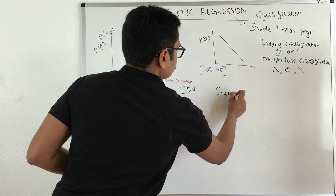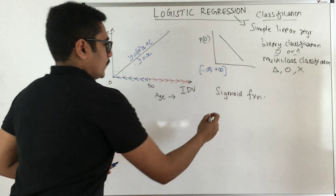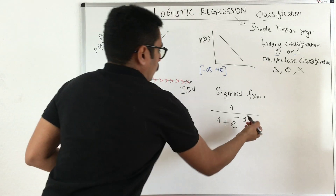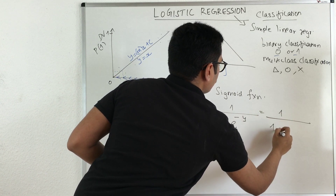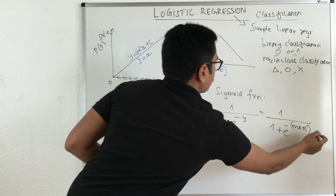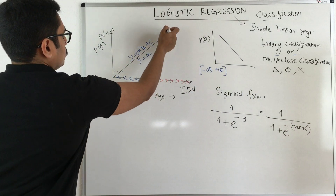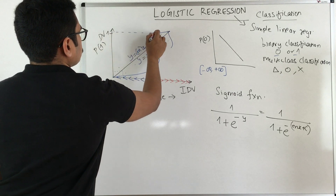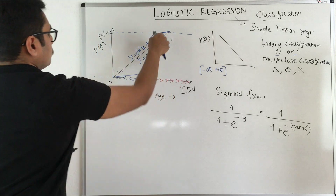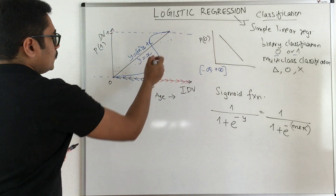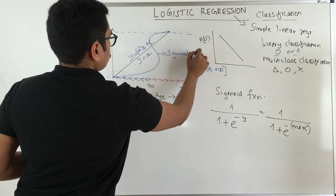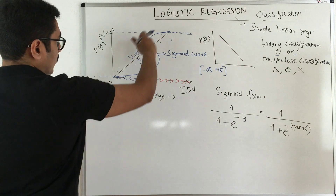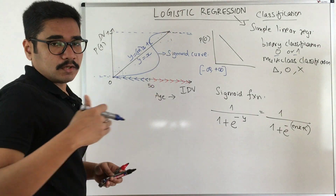To fix this, we need to squeeze the linear line into some function. In logistic regression, we mainly use a sigmoid function, given as 1 divided by (1 + e raised to minus y). If you substitute y with the line equation mx + c, this line gets transformed into an S-shaped curve, called the sigmoid curve. The probability values are now squeezed between 0 and 1, and no longer go beyond infinity or minus infinity.